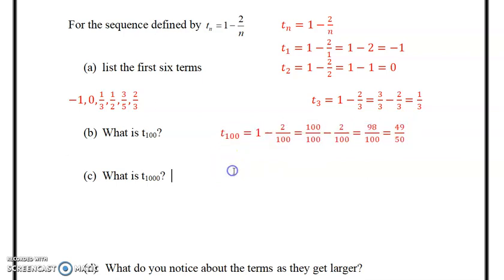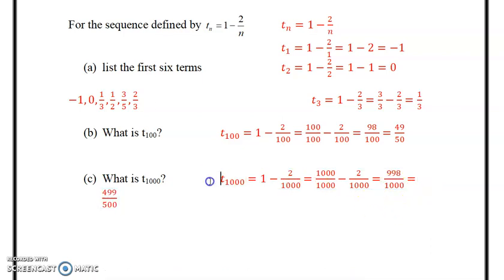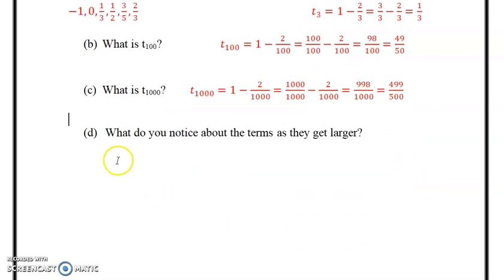Simplify by 2: 49 over 50, by numerator and denominator by 2. So there's your answer: 49 over 50. And then the thousandth term is the same idea. I'm going to copy and paste this because it's going to be very similar. The denominator would be a thousand. That would be a thousand over a thousand minus two over a thousand, which would be 998 over 1000, which would be 998 over 1000.